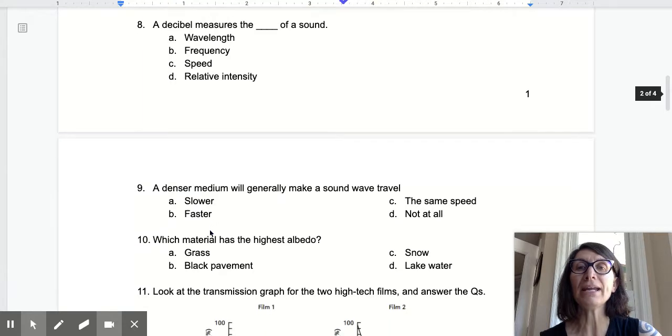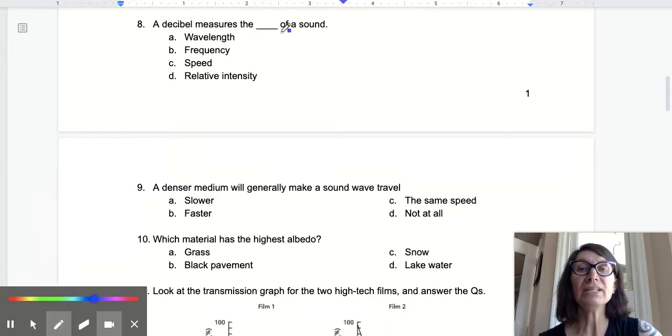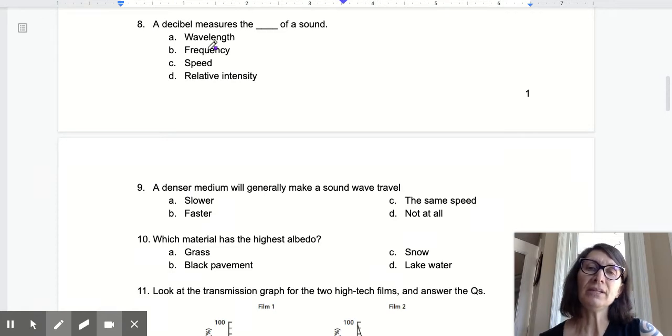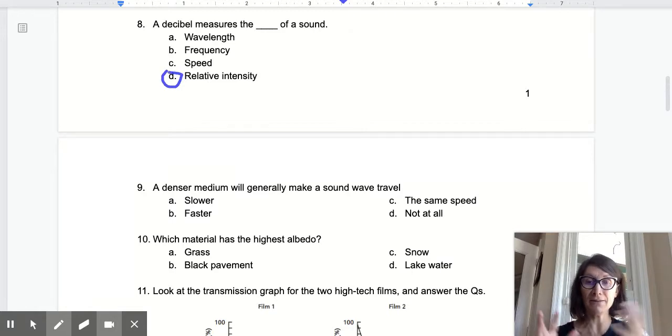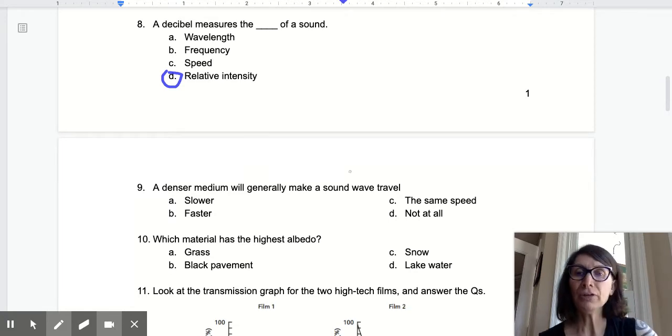And let's go to number eight here. A decibel measures the wavelength, no frequency, no speed, no intensity. So a lot of this is word association and synthesizing and organizing the information and that repetitive talk that you've been giving yourself. A denser medium will generally make a sound wave. So if sound is vibrating particles in a compression way, the closer together the particles, the faster the compressions can move. So a denser medium will generally make sound travel faster.